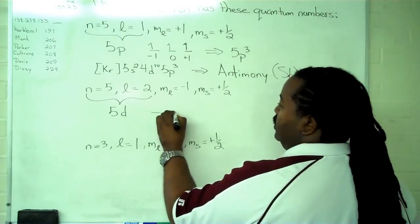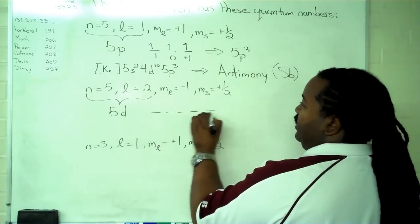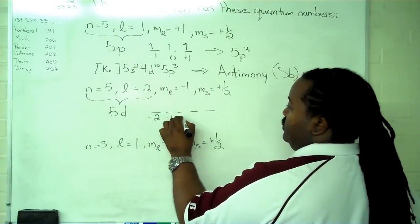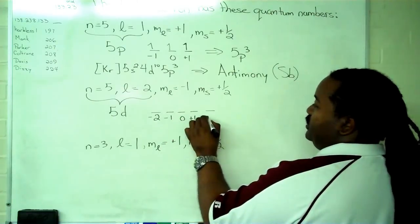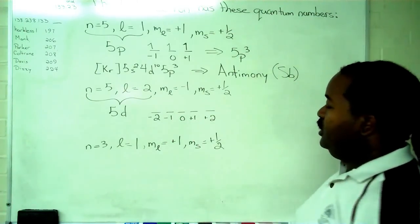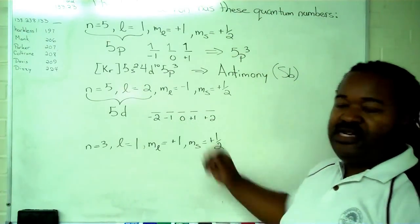We can then go to our next step, which is occupancy. We have five of these labeled minus 2, minus 1, 0, plus 1, and plus 2.